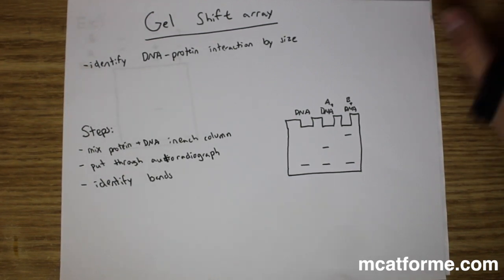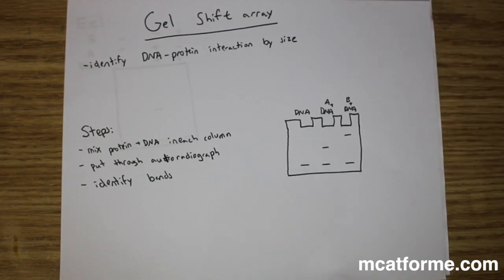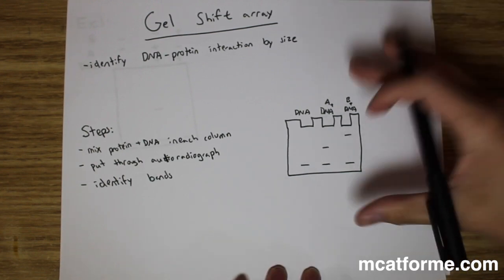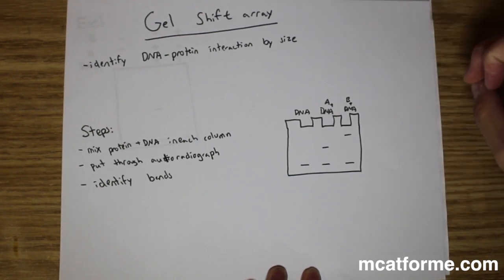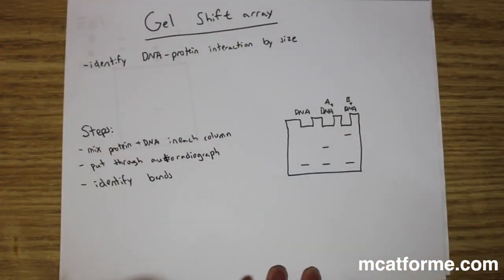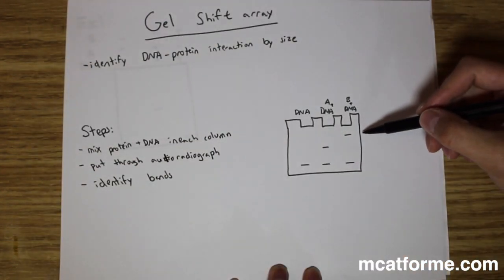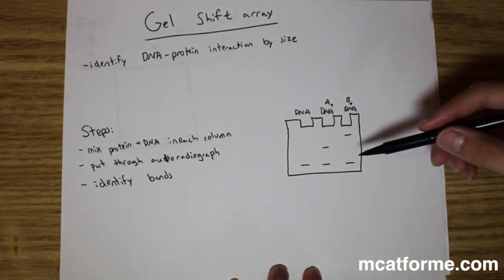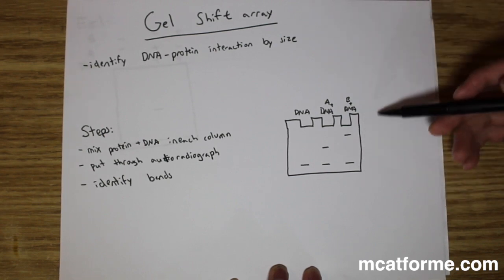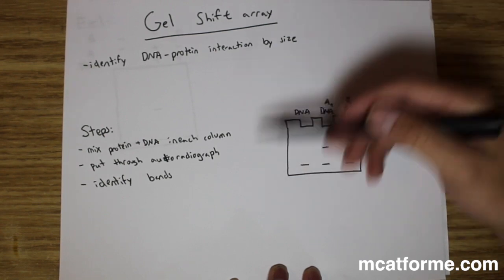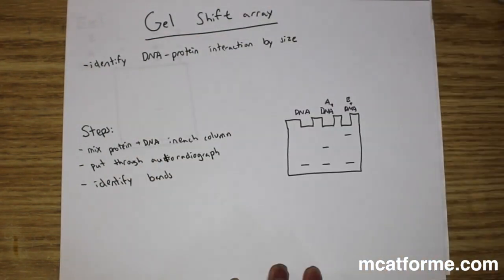The MCAT is making somewhat of a shift towards experimental problems, so this is a very commonly tested topic on the MCAT because these problems are pretty tricky. Before we start talking about what it is, I just wanted to point out this graph — a lot of you will probably remember this from labs or from your biochem class. Now we're going to figure out how these work and what we can do with them.